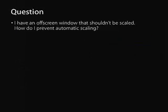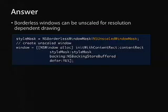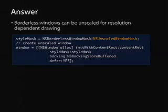Next question: I have an off-screen view that shouldn't be scaled — how do I prevent automatic scaling? In Tiger we provided this ability using NSUnscaledWindowMask when applied to the NSBorderlessWindowMask. You can only use this on borderless windows, but it's a pretty simple solution — just apply it and pass it into the init method.